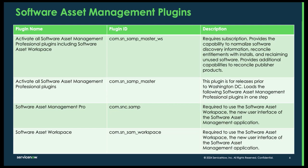Underneath that we have the old master, which is prior to the Washington release. This is where you would be able to install all your plugins in one step. If you decide not to do all the plugins at one time and have a reason not to, you are able to individually request and install these plugins. The first one you'd want to do would be the SAM Pro plugin, followed by the software asset workspace plugin.